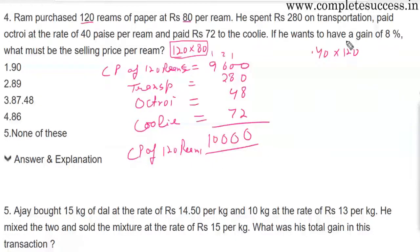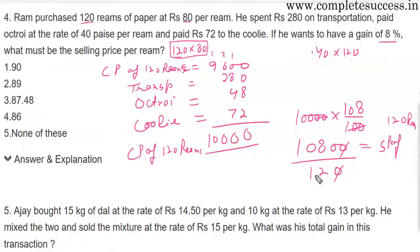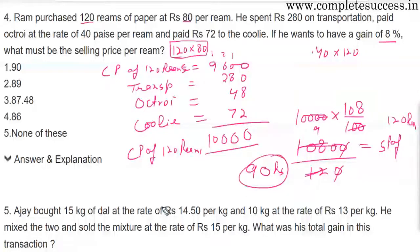He wants a gain of 8%, so we take Rs.10,000 and increase it by 8%. That gives a selling price of Rs.10,800 for 120 rims. Dividing 10,800 by 120, the selling price per rim should be Rs.90. The answer is the first option.